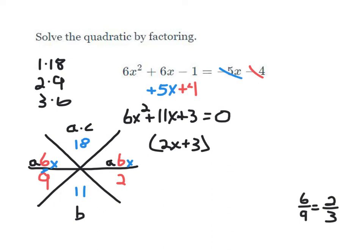And then the other factor: we have 6x plus 2. We can simplify this because 6 and 2 have 2 in common. It's like an improper fraction — 2 goes into 6 three times, so that simplifies to 3 over 1. So that's 3x plus 1.